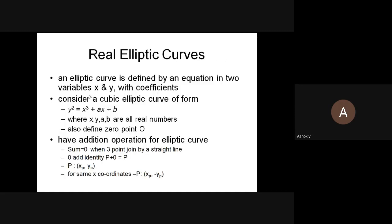We can define the elliptic curve in three different ways. The first one is the elliptic curve over real numbers. When we say elliptic, it is actually not an ellipse - it uses cubic equations. The cubic equation for the elliptic curve over real numbers is y² = x³ + ax + b, where x, y, a, and b are all real numbers.